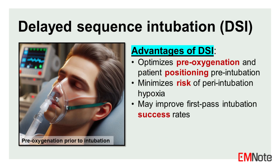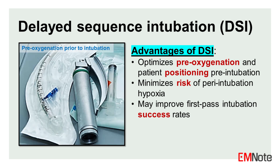Advantages. The primary advantage of DSI over RSI is the ability to optimize pre-oxygenation and patient positioning prior to attempting laryngoscopy. This minimizes the risk of peri-intubation hypoxia, a common complication of emergency airways. Additionally, by pre-treating agitation with ketamine sedation, DSI may improve first-pass intubation success rates.